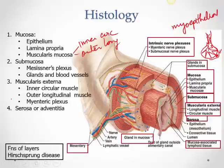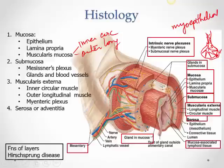The outermost layer is the serosa if peritoneum covers it, or adventitia (connective tissue) in regions without peritoneum. These nerve plexuses are important because they supply muscle and glands throughout the gut wall.